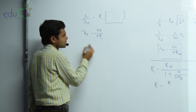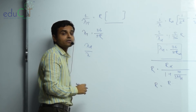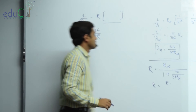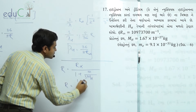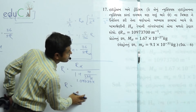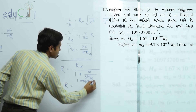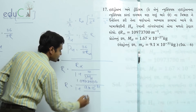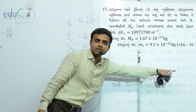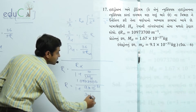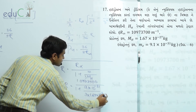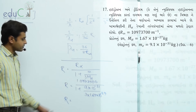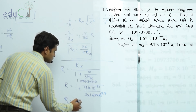Ratio: lambda T divided by lambda H. R infinity is 1.09737 × 10⁷, upon (1 plus 9.1 × 10⁻³¹ upon 3 times M_H, where M_H is 1.67 × 10⁻²⁷). And 1.67 × 10⁻²⁷.